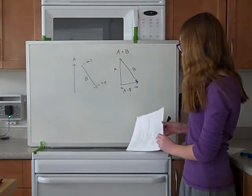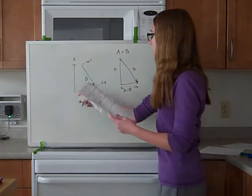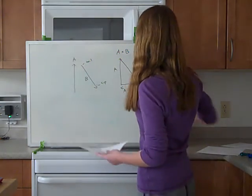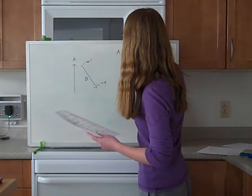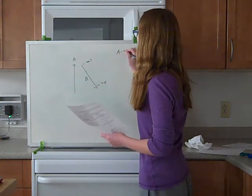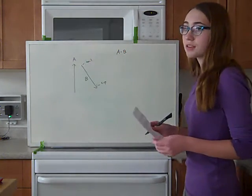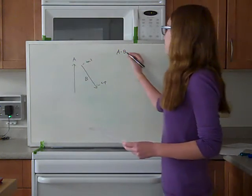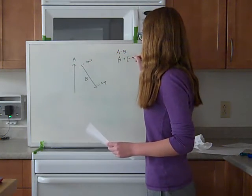And then, for vector subtraction, I think we have the same things. Yeah, it's still A and B, except now we're going to do A minus B. So, A minus B. Now, when you think about subtraction, with vectors, it's easiest to think of it as adding a negative number. So, A plus negative B.